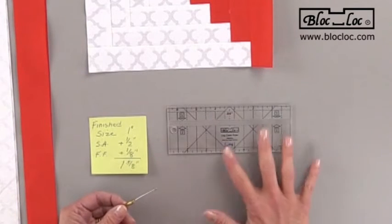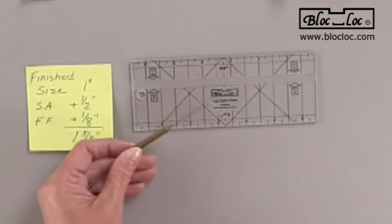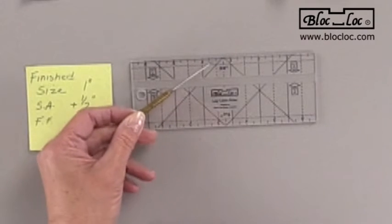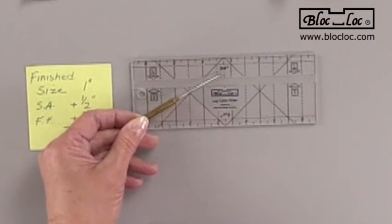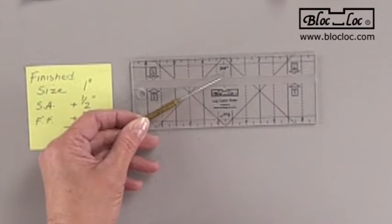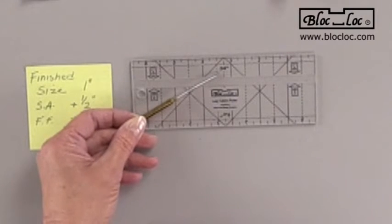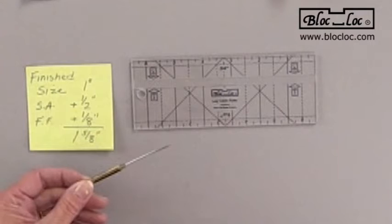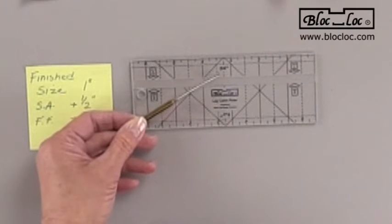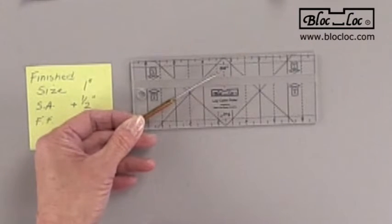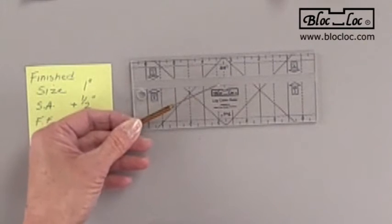This ruler, for example, from the groove to the outside edge is listed as three quarters of an inch - that is the finished width of the log. So for this, it would be your finished width plus your seam allowance plus your fudge factor of an eighth of an inch, and that's what size you cut your strips.